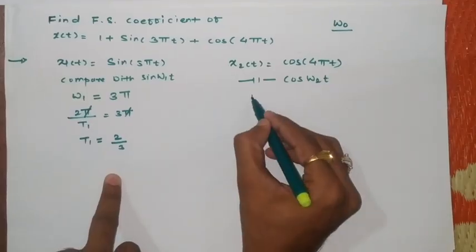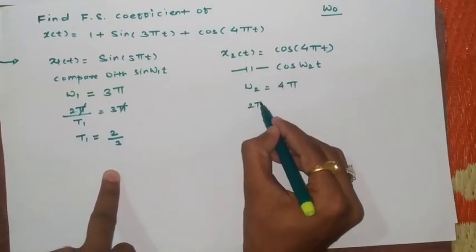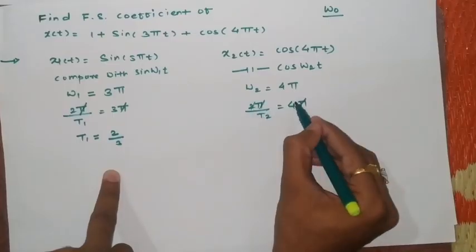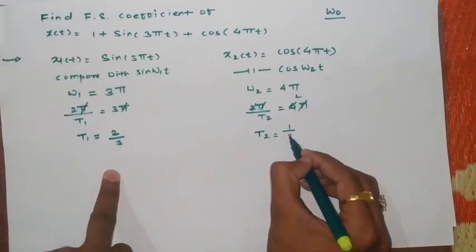We will get ω2 as 4π. Similarly this is 2π/T2 equals 4π. This will get cancelled and we will get T2 as 1 upon 2.